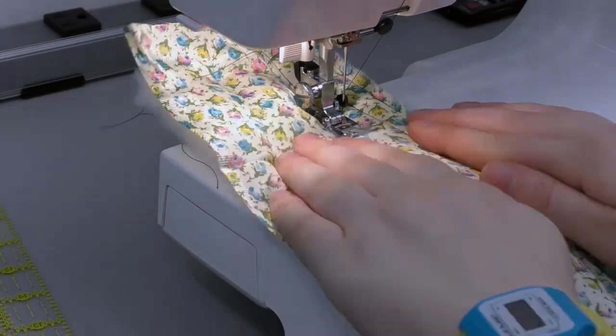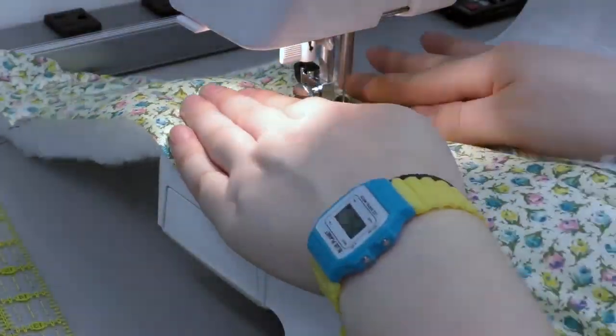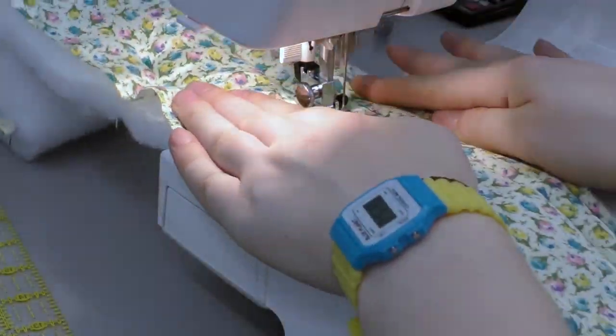Next you want to quilt your lining to your batting. This probably takes the longest time to do. I didn't feel like being fancy so I just did straight lines.